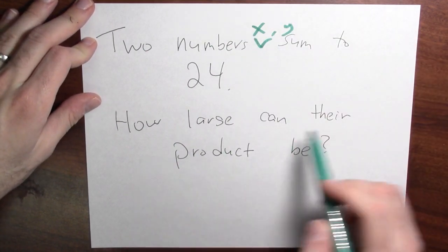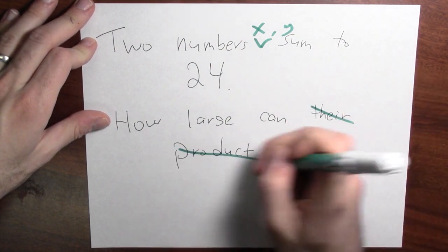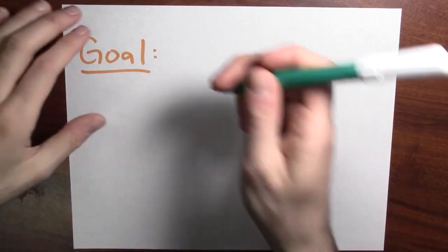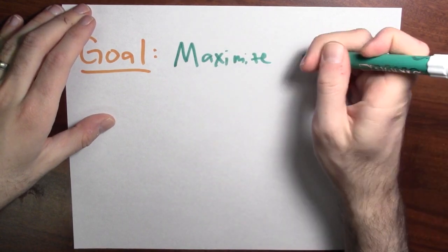And instead of just saying how large can their product be, I can say how large can x times y be. So what's the goal? Well, my goal here is really just to maximize the product. So maximize x times y.